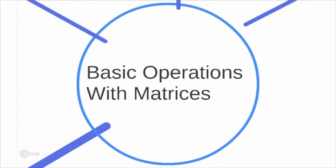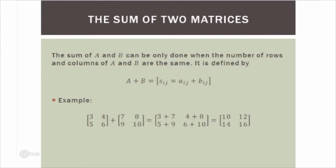What can we do with a matrix? Here are some basic operations. The sum of two matrices A and B can only be done when the number of rows and columns of A and B are the same. It's easier to follow an example: you just take the same entries in each matrix and add them together. For example, A1,1 and B1,1 are added together, so 3 plus 7 gives the entry in the top left of the output matrix.